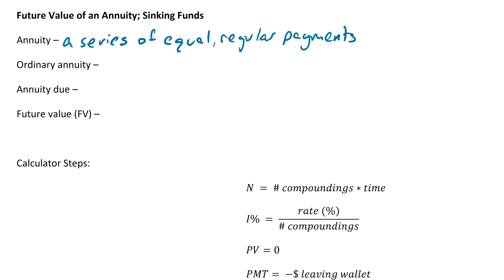The important thing is the series of equal regular payments. An ordinary annuity is where payments are made at the end of the period — so at the end of the month if payments are due monthly, or at the end of the year if due yearly. An annuity due is the opposite: payments are made at the beginning.